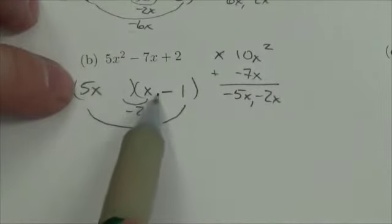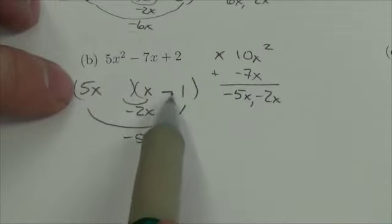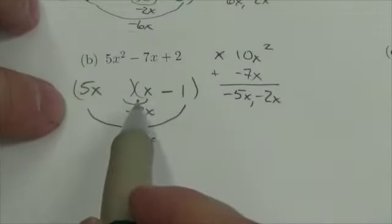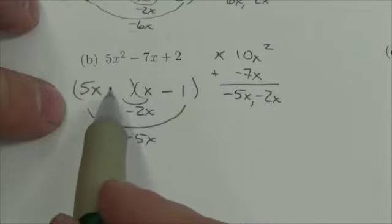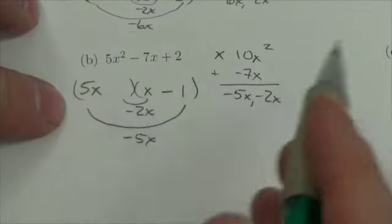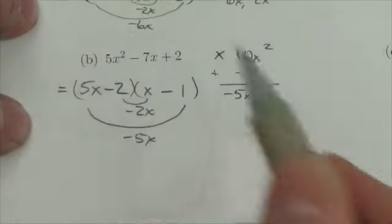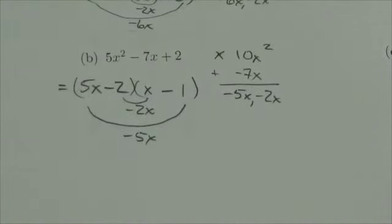And there we go. 5x times x is 5x². 5x times negative 1 is negative 5x. Everything's consistent thus far. If this is x and the product of these two has to be negative 2x, that makes this in here negative 2. And there we go. There's that expression in factor form.